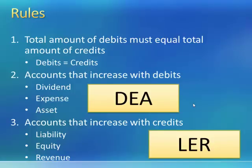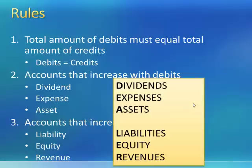So we have an acronym to help us remember. Dividend, expense, and asset accounts increase with debits. Liability, equity, and revenue accounts increase with credits.